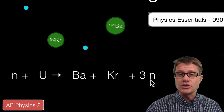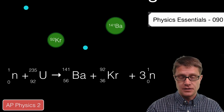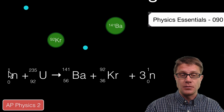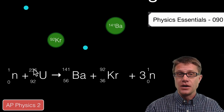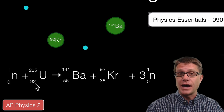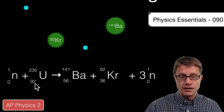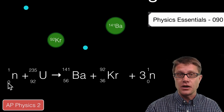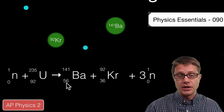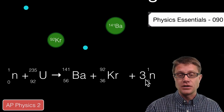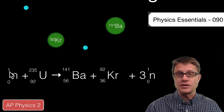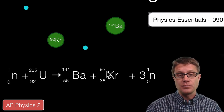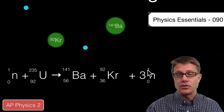We are ignoring the electrons but we still include the charge — that is the positive charge inside the nucleus — and the mass number as well. A neutron has a charge of zero and a mass number of one. Uranium has a charge of 92+ and a mass number of 235. On the left side the charge is 92 plus zero, so 92+. On the right side we have +56 plus +36 plus zero from the three neutrons, which equals 92. For mass: 235 plus 1 equals 236 on the left, and 141 plus 92 plus 3 equals 236 on the right.